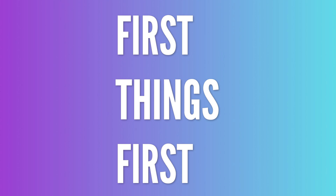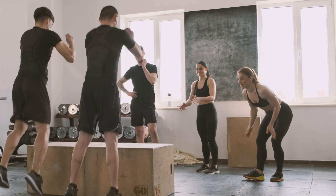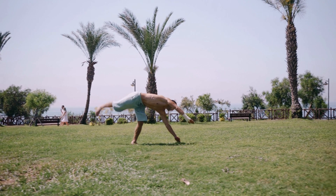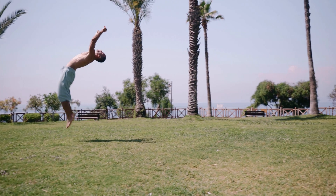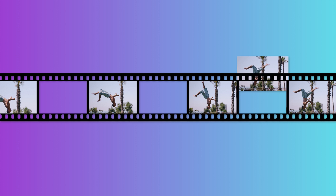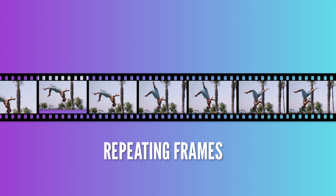First things first. In this video, we're going to be speeding footage up and slowing footage down, so it's very important that you start with the right frame rate. If you don't start with footage that has the right frame rate, when you slow it down, it's going to stutter or look choppy. At a certain point, if the frame rate of the footage isn't high enough, as you're slowing the footage down, it will start to create gaps between each frame. And in order to fill in these gaps, the program will simply repeat frames — and that's what causes the choppy look.